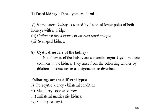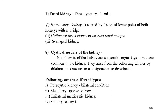The eighth congenital anomaly is the cystic disorder of the kidney. Not all cysts of the kidney are congenital in origin; cysts are quite common and arise from collecting tubules by dilatation, obstruction, or as outpouches or diverticula. Types include polycystic kidney, which may be a bilateral condition, medullary sponge kidney, unilateral multicystic kidney, and solitary renal cyst.